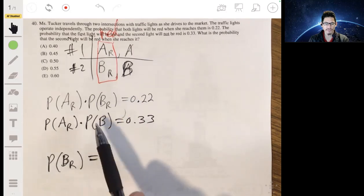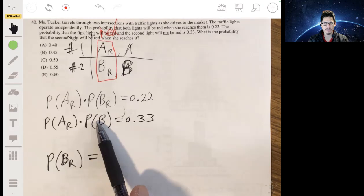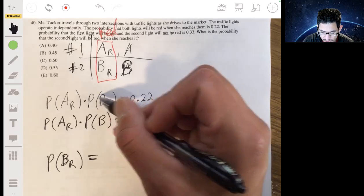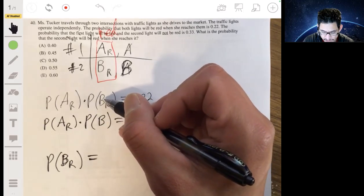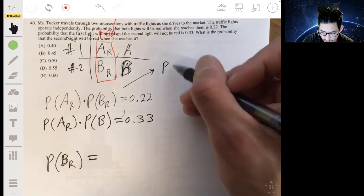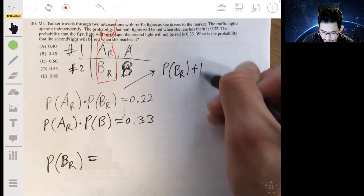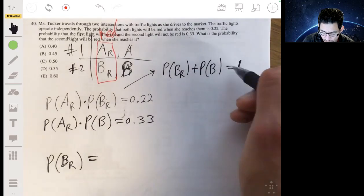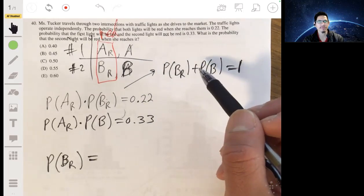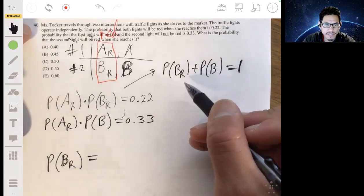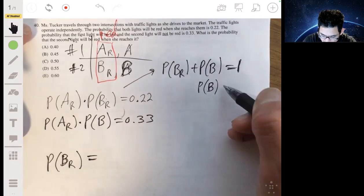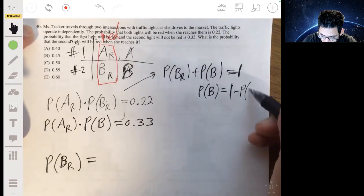So remember, we want to solve this, we want to solve for this value. So what we can actually do is first, these two, remember, the second light being red and the second light not being red, these are complementary, so the probability of BR plus the probability of B is equal to 1. Because either the light is red or it's not red, so they're both going to have to add up to 1 because they make up all the possibilities. So let's just rewrite this just for PB. So the probability of B is then just equal to 1 minus the probability of BR.